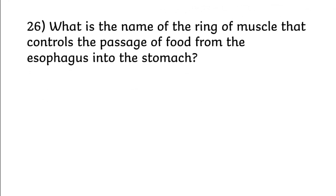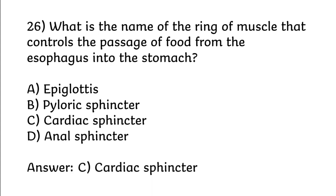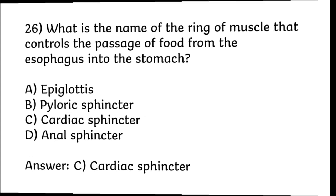What is the name of the ring of muscle that controls the passage of food from the esophagus into the stomach? Epiglottis, pyloric sphincter, cardiac sphincter, anal sphincter. Correct answer is Option C: Cardiac sphincter.